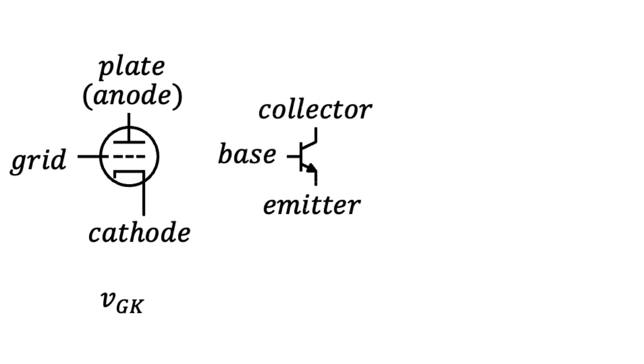Then there was the bipolar junction transistor, the BJT, shown here in its NPN form, a three-terminal device with a collector, a base, and emitter, somewhat analogous to the plate, the grid, and the cathode of the triode. And people would characterize things by the voltage between the base and the emitter.